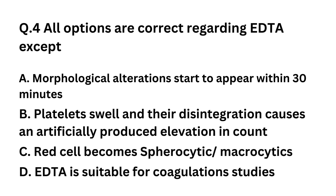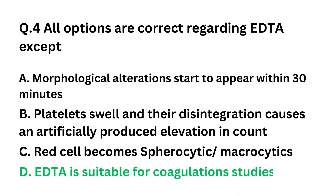Question 4: All options are correct regarding EDTA except. Option A: Morphological alterations start to appear within 30 minutes. Option B: Platelets swell and their disintegration causes an artificially produced elevation in count. Option C: Red cells become pyrocytic or macrocytic. Option D: EDTA is suitable for coagulation studies. The correct answer is Option D: EDTA is suitable for coagulation studies.